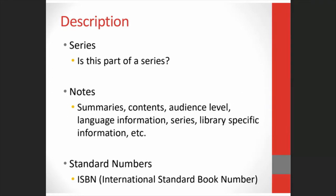We also include information about series, if it's on the item or we can get it from another source — is this part of a series, and what number in the series? Sometimes information we have doesn't quite fit in any other part of the catalog record, but we still want to record it, so we put it in a note. Notes can include summary statements for what the book is about, contents notes for what's included, notes about the audience level — is this for children or adults — and Lexile levels. You can also include language information: is this book in English, Spanish, is it a translation?